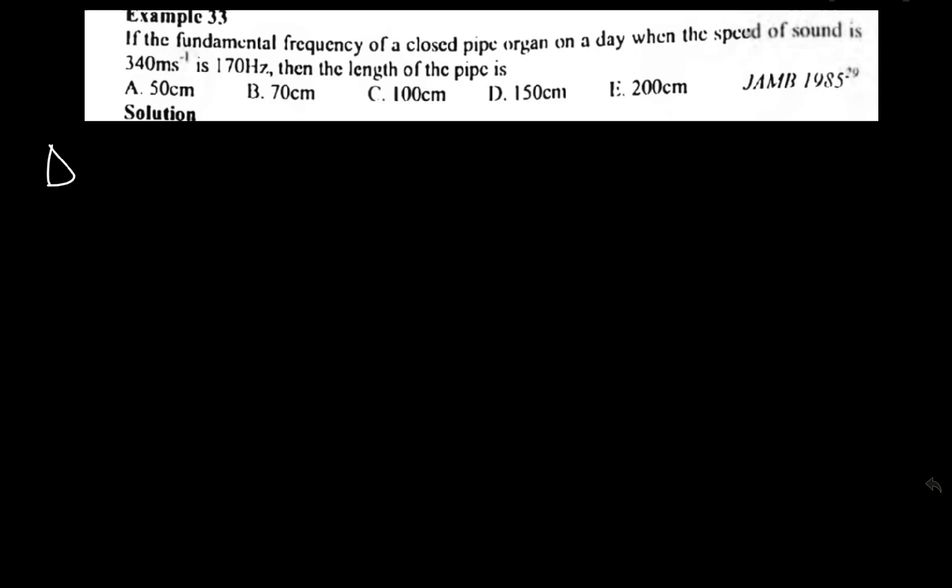Now let's interpret the problem. Write down your data. V is 340 meters per second, while frequency is 170 hertz. You have to solve for the length of the pipe, which is what we do not know.